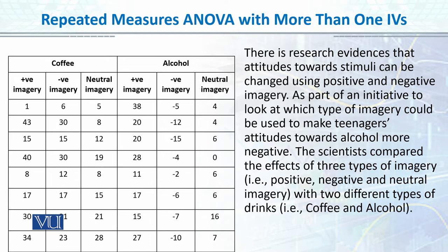So here we have two independent variables. The first is type of drink, which has two levels: alcohol and coffee. The second independent variable is type of imagery, which has three levels: positive, negative, and neutral imagery. This 2×3 design means we have two-way ANOVA with two independent variables — one with two levels and one with three levels. Since we are calling it a repeated measures ANOVA, we are using the same participants in each of these six conditions.